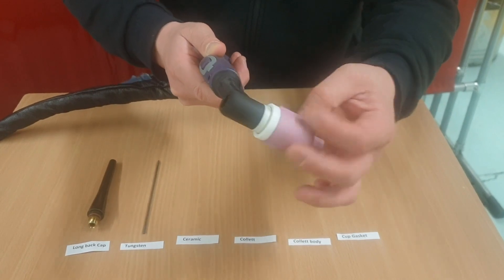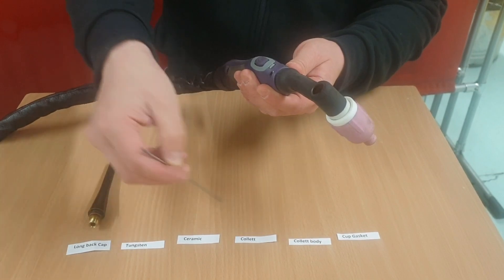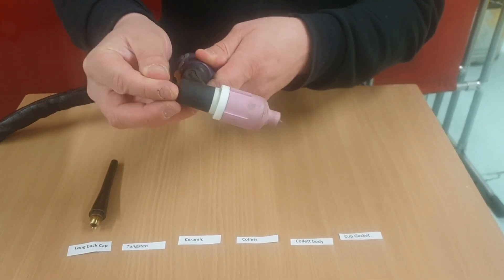Next is our ceramic which has been chosen to fit our collet body. You do have to be cautious when purchasing these as they come in different sizes, so make sure that the collet body and ceramic both match.